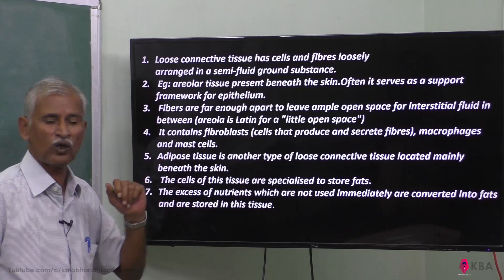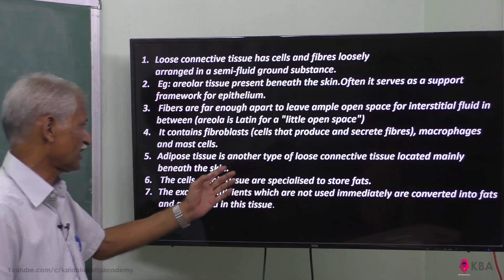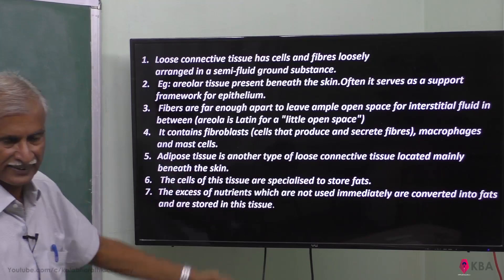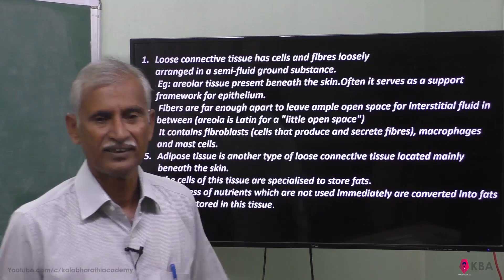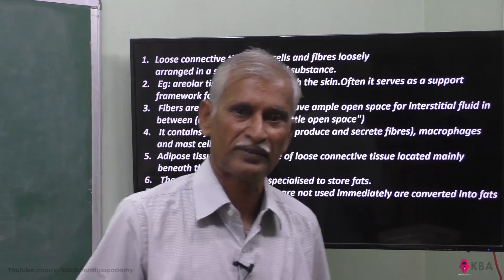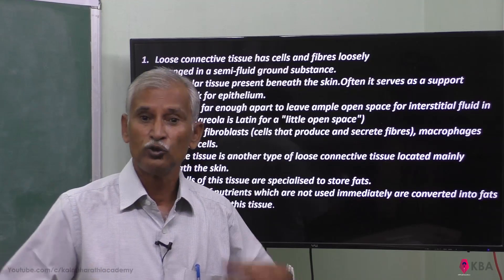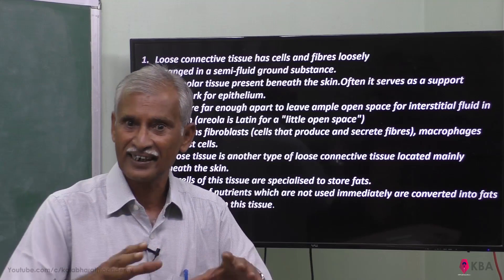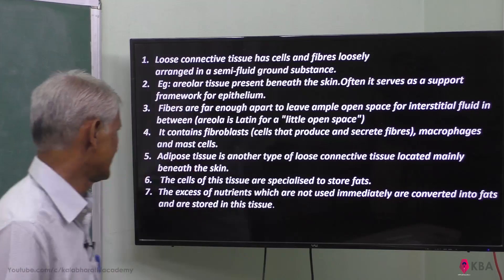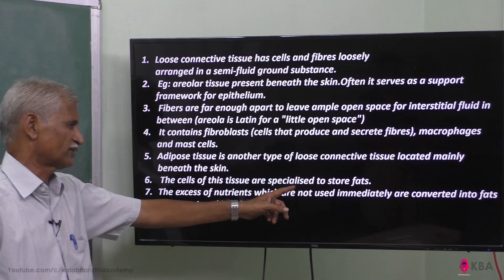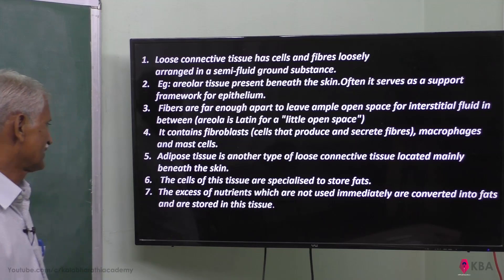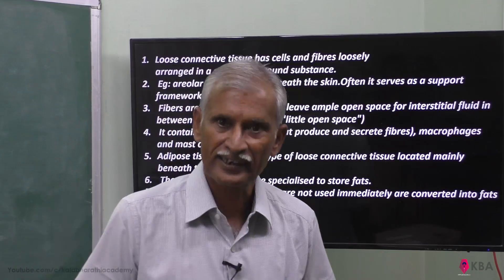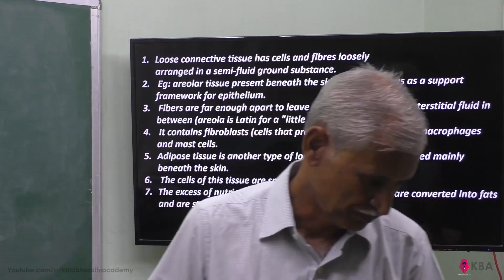Then comes adipose tissue, also called fat tissue. It is also a connective tissue — another type of loose connective tissue. Located mainly beneath the skin. Skin has a fat deposit; the heart also has a fat deposit. They are specialized to store fats. The excess nutrients not used immediately are stored as fat tissue — adipose tissue.